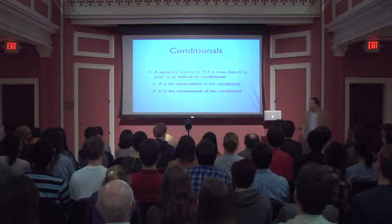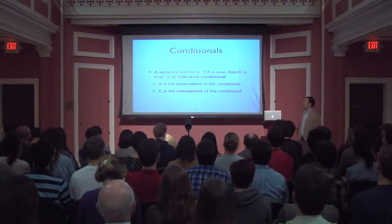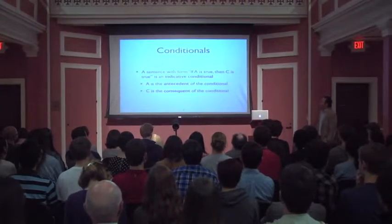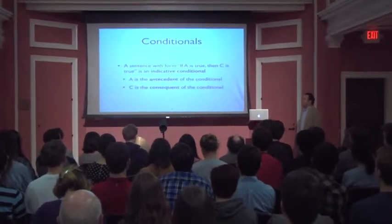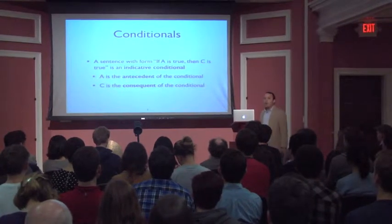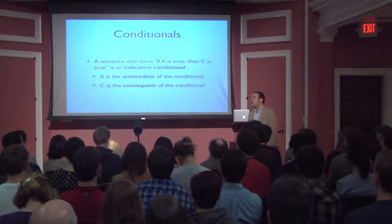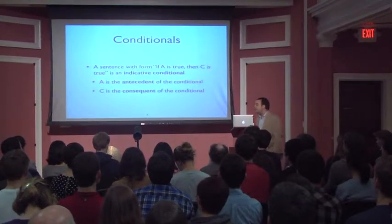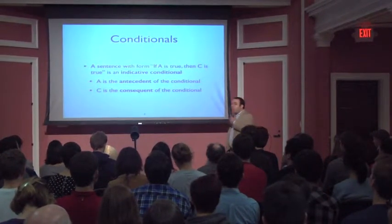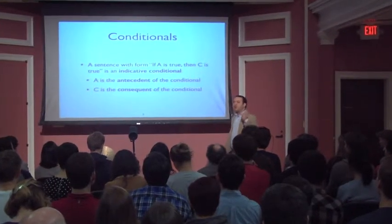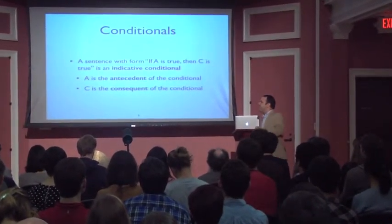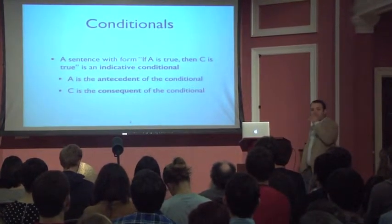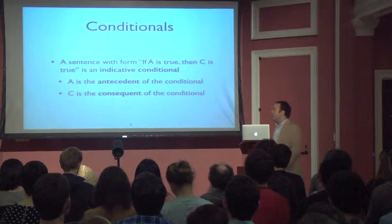Maybe familiar to those of you in linguistics or taking introductory philosophy classes, a sentence with the form 'if A is true, then C is true' is an indicative conditional. Indicative conditionals are just one important class of conditionals. There are other conditionals — sometimes called subjunctive or counterfactual conditionals — that have to do with what the world would be like if certain things had been true. But for tonight I just want to focus on indicative conditionals, where the antecedent, the A part, specifies some question about whether some claim is actually true in the world.